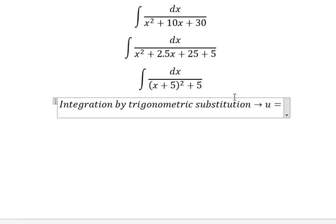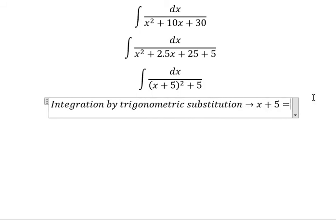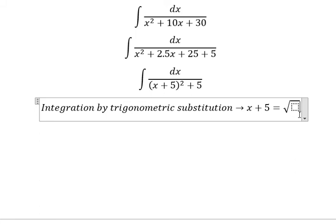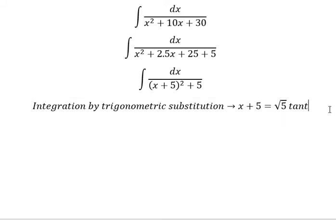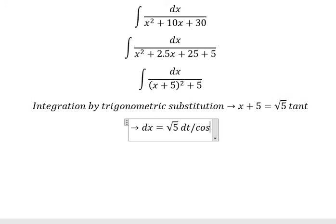We substitute x + 5 equals the square root of 5 times tan t. If we take the first derivative on both sides, we get dx equals square root of 5 multiplied by dt over cos² t.